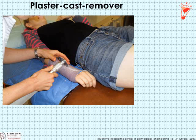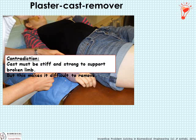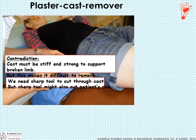While we're on the topic of prior action, here's another quick example. You may or may not have had the experience of a broken limb, but you probably know someone who has had a cast. What you may not know is how they get the cast off — they need to use a very sharp saw, and to the naked eye you can see a disaster waiting to happen. Let's formulate this in terms of a contradiction. The cast has to be stiff to support the broken limb, but that stiffness makes it difficult to remove. From the removal perspective, we need a sharp tool to cut through the tough, strong cast, but that same sharp tool might cut the patient's skin.